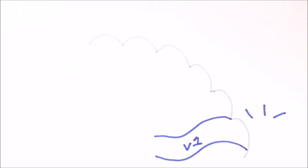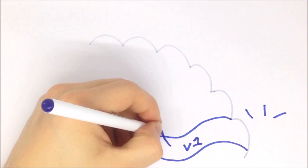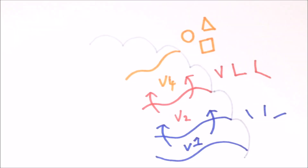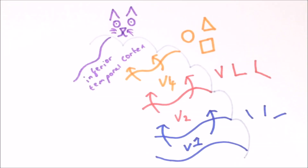We have seen how the primary visual cortex, or V1, is able to use input from the thalamus to detect lines of specific orientation. As well as input from the thalamus, cortical areas also receive input from other cortical areas. In the visual system: V1 detects lines of specific orientation, V2 combines these lines to detect specific angles, V4 combines these angles to detect simple shapes, and the inferior temporal cortex combines these shapes to detect objects. We can see that subsequent areas of the cortex can combine information encoded in preceding areas to build increasingly complex representations.